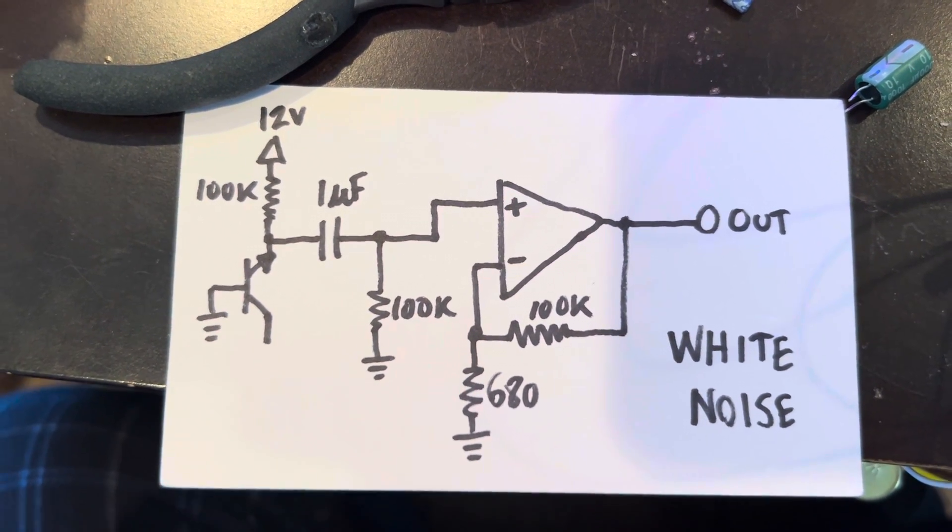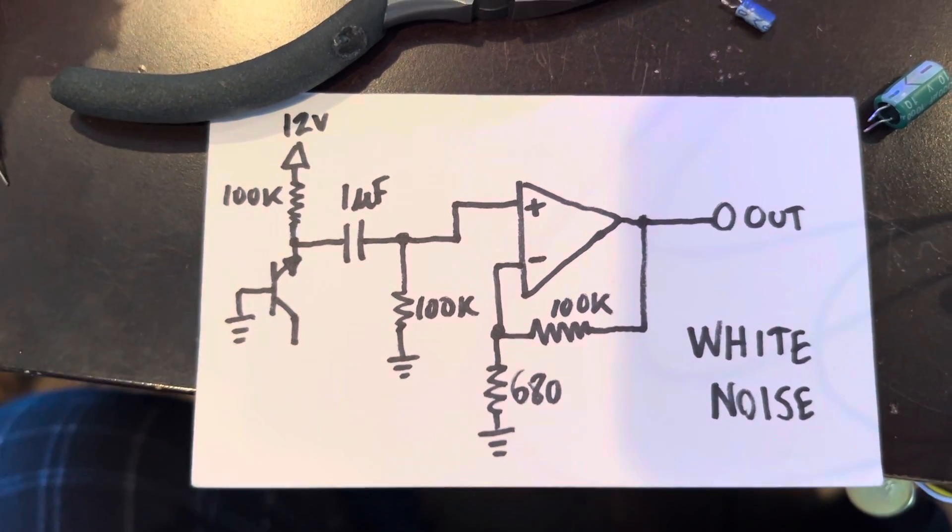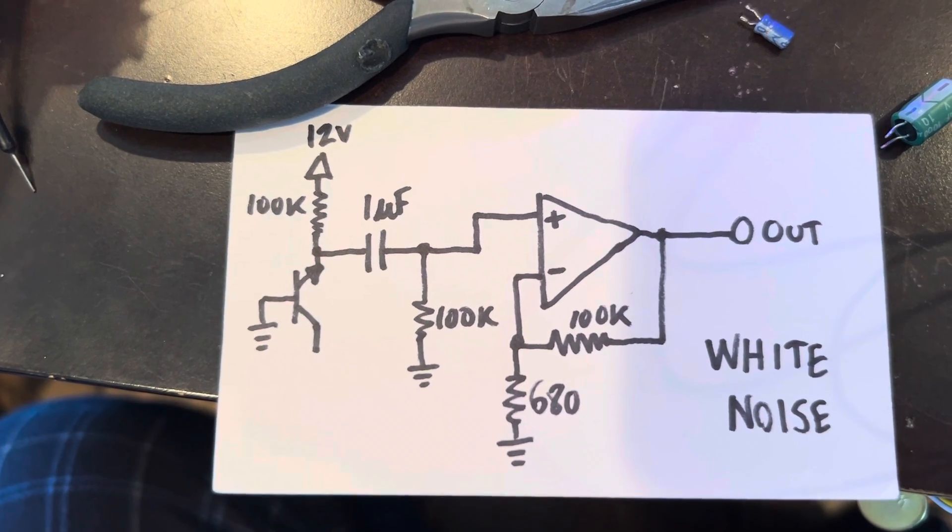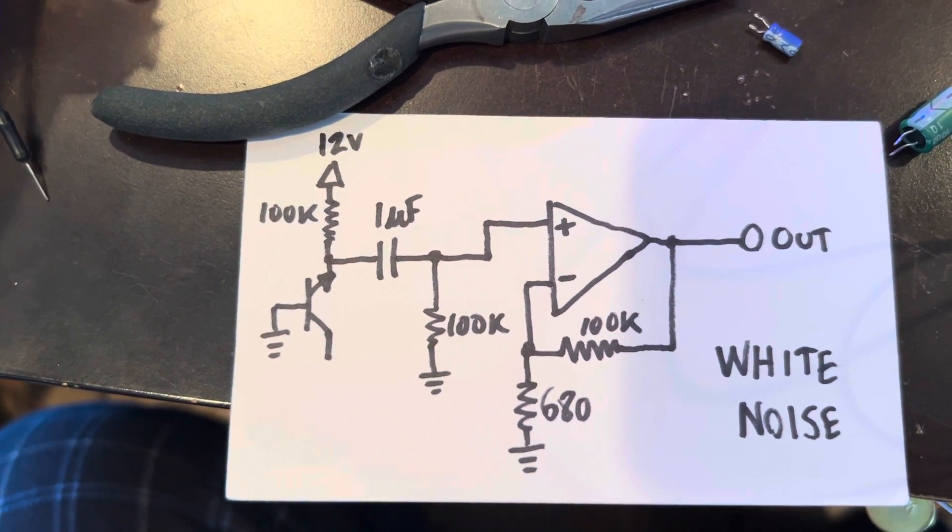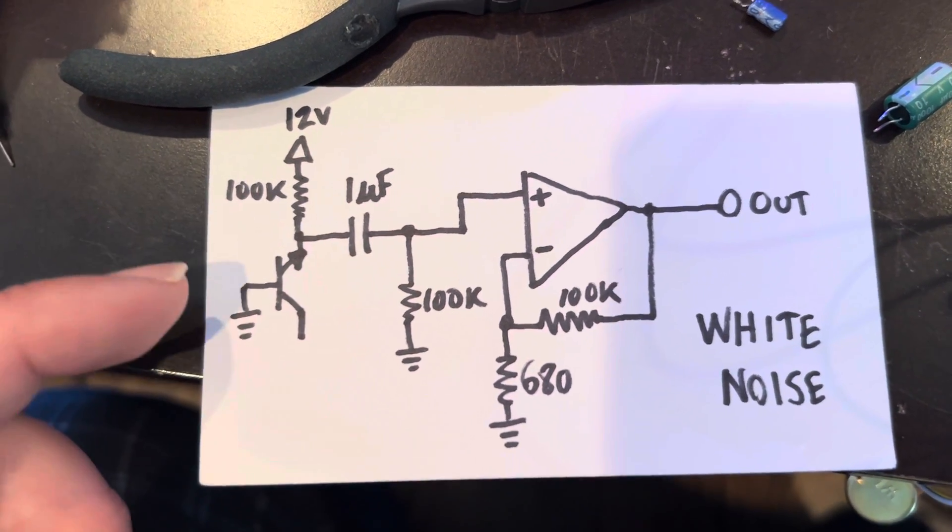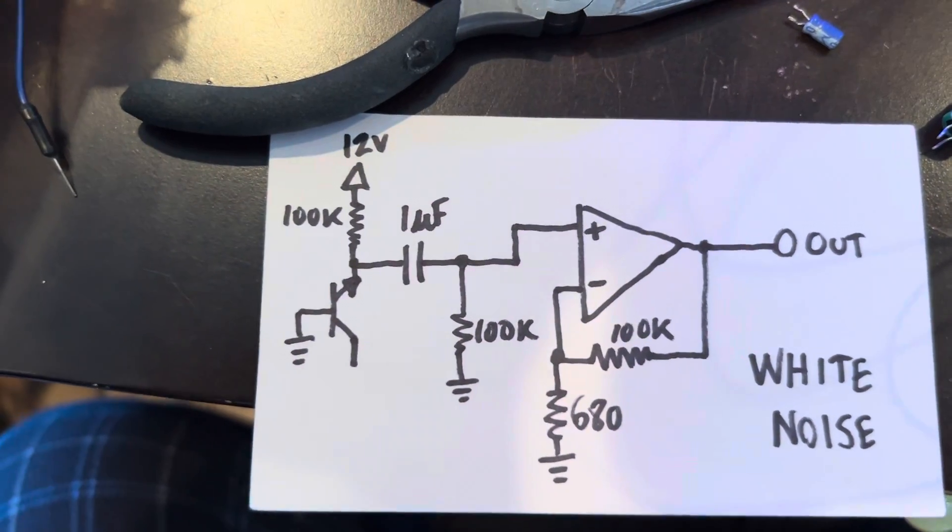It's wired backwards. You have a 12 volt supply—anything over six volts according to the 2N2222 transistor that I'm using—going through a 100k resistor to the emitter. The base is wired to ground, and the collector is not attached to anything.